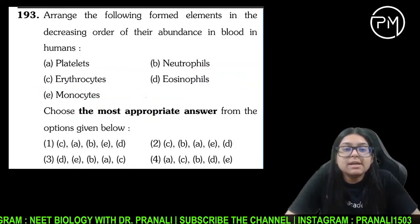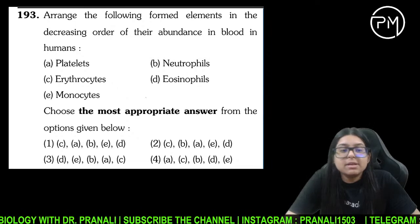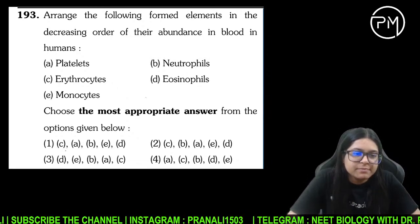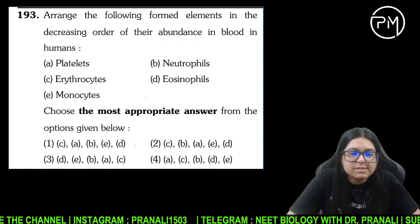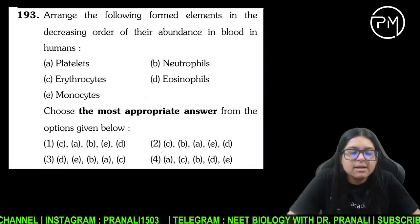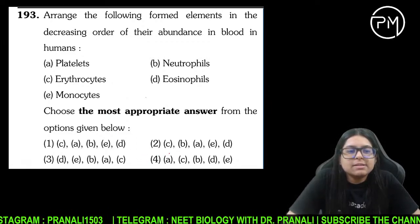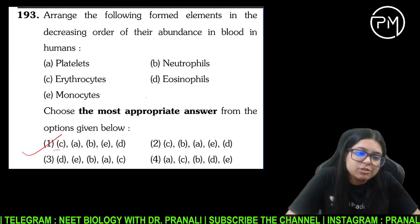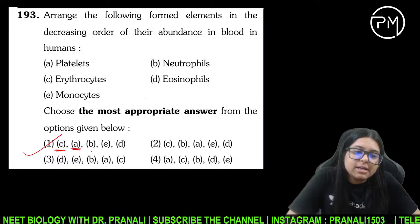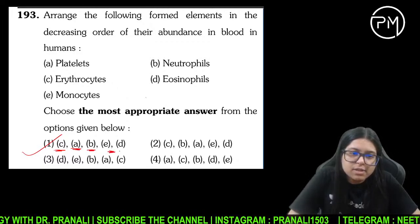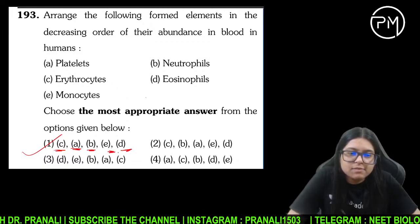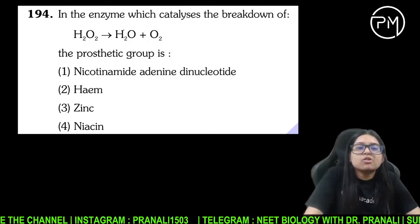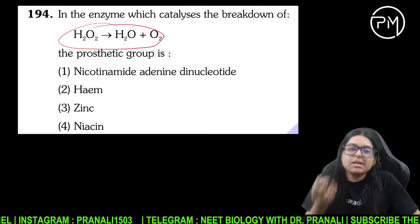Decreasing order mein — sabse zyada kya hai? Sabse zyada erythrocytes hain, phir platelets, phir neutrophils, phir monocytes, phir eosinophils — zyada se kam ki taraf. Isko break karne ke liye kaun sa enzyme chahiye? Peroxidase chahiye — iska coenzyme prostatic group heme hai.